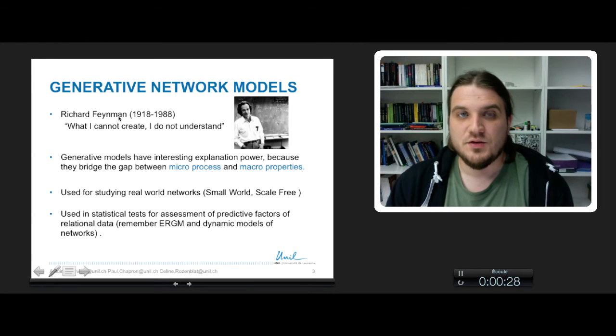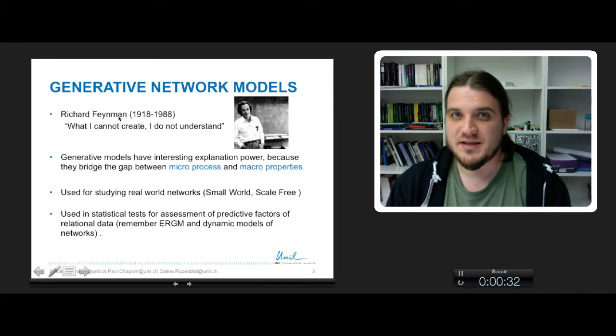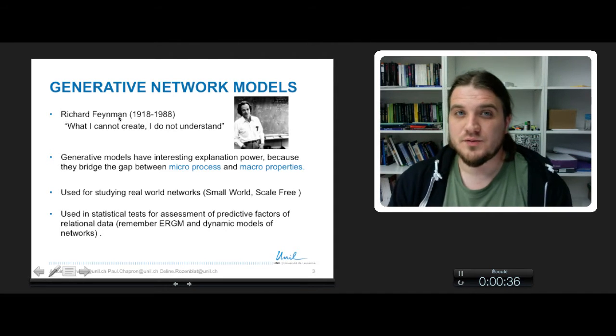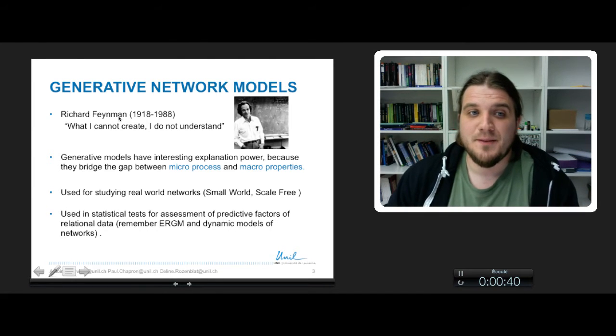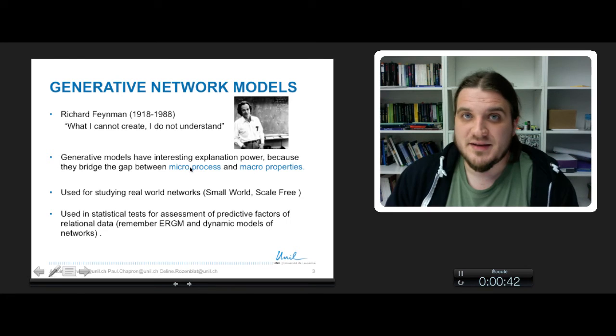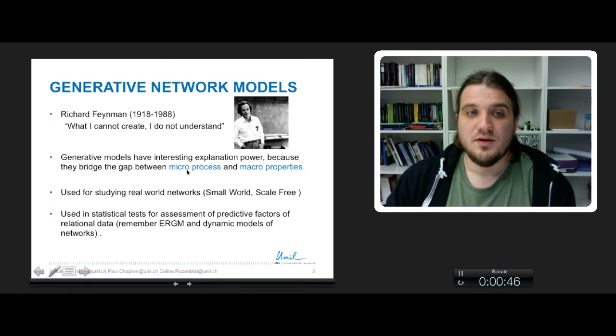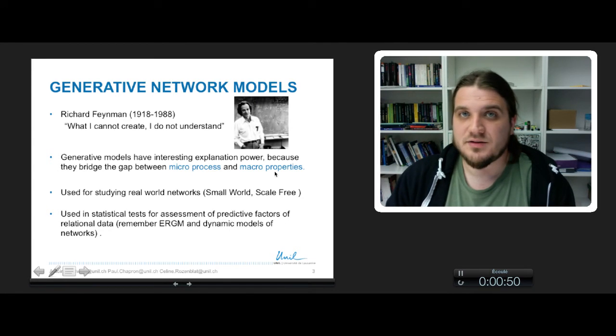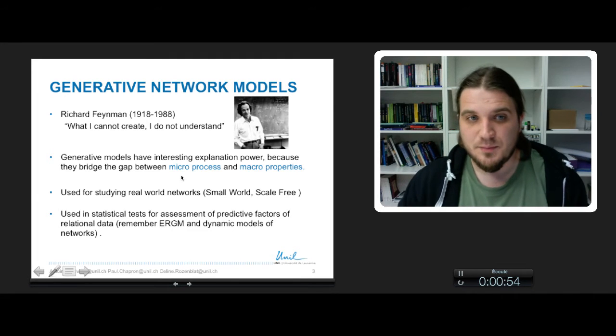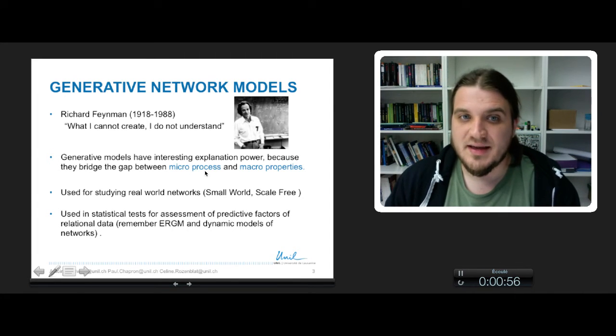For example, you know that homophily and transitivity lead to clusters, so this is a generative model that we could design, postulating that transitivity and homophily at the node level will result in higher clustering in the generative networks. So we postulate a link between microprocess and macro properties.